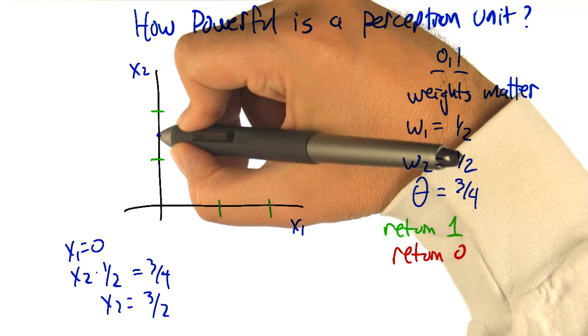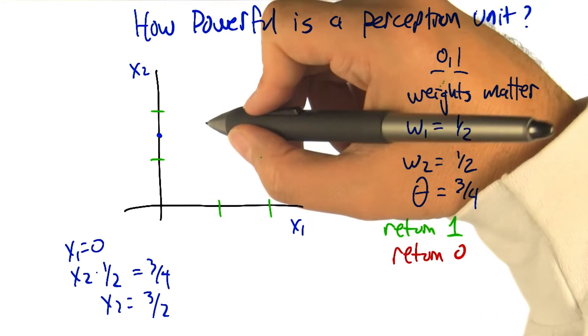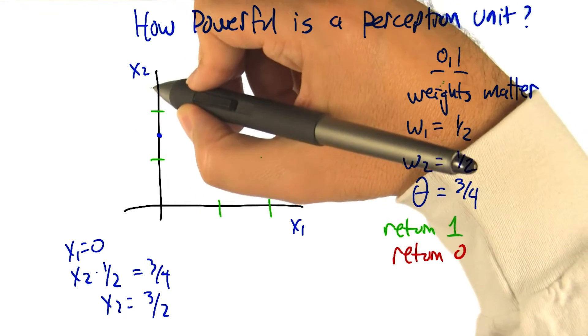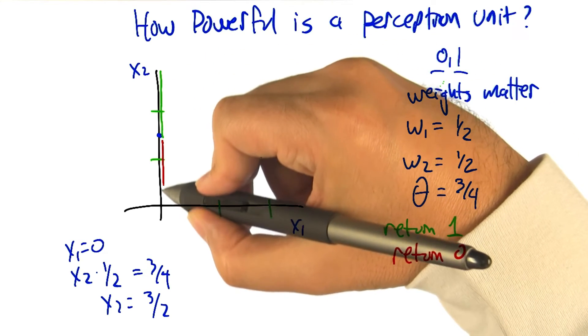So that's this point here. That's going to be a dividing line. Anywhere above here, it will break the threshold and return a 1. So these are all going to be 1s, and then below this, these are all going to be 0s.